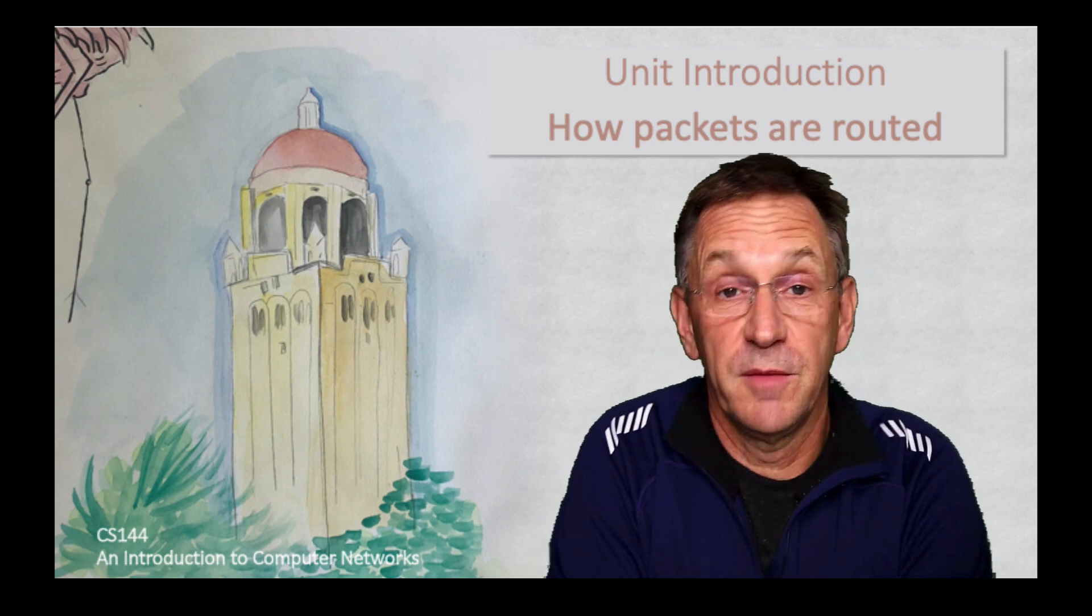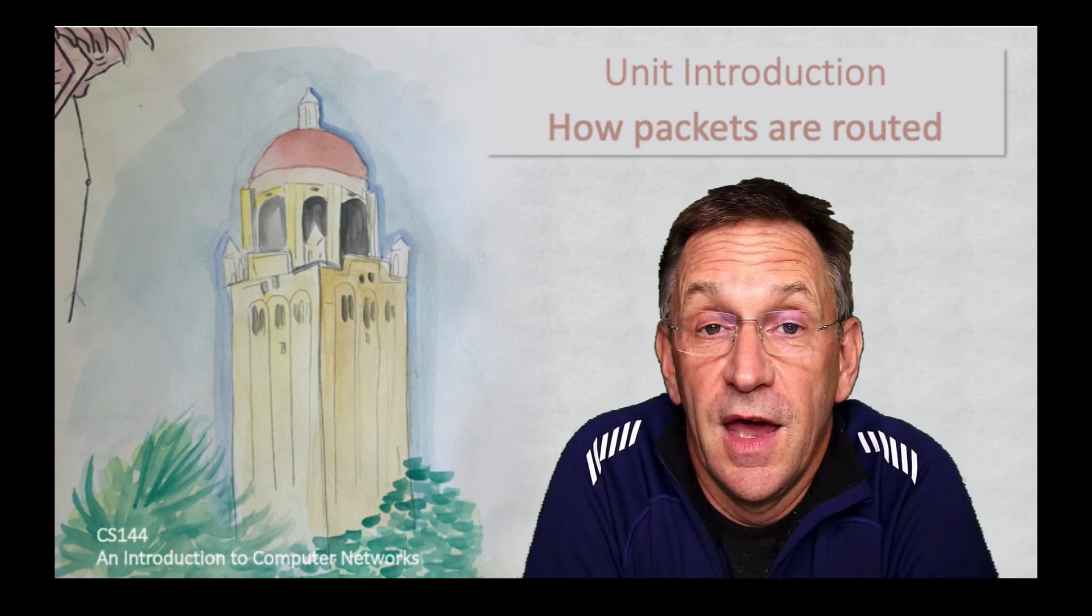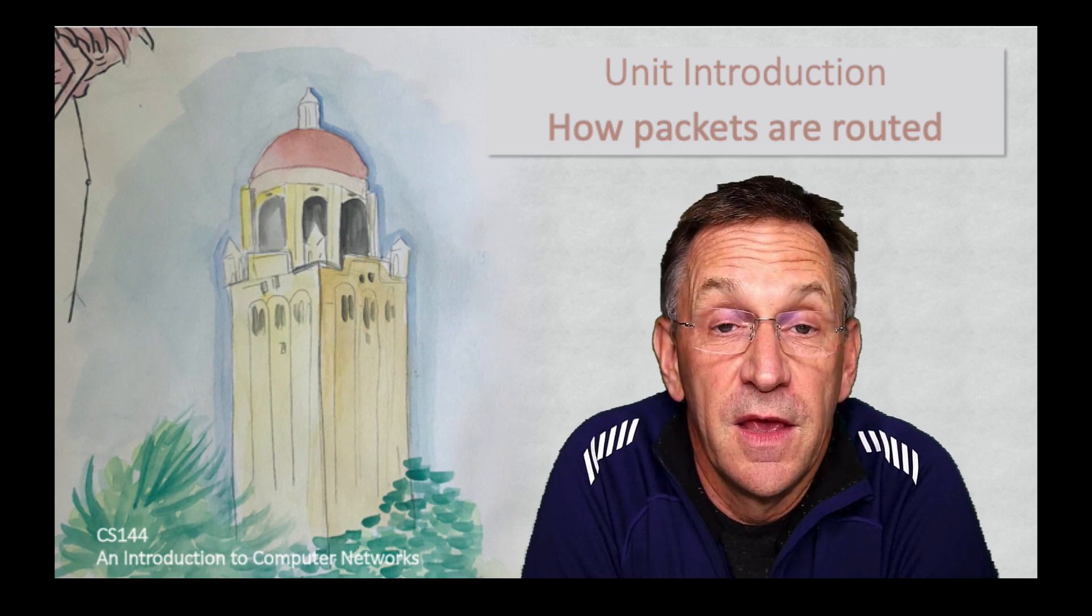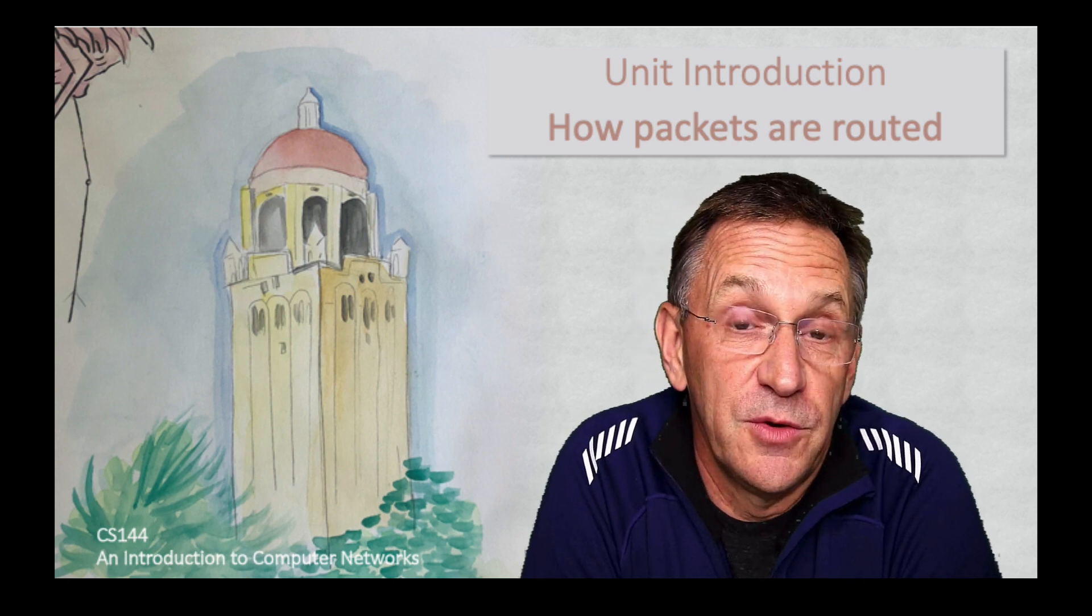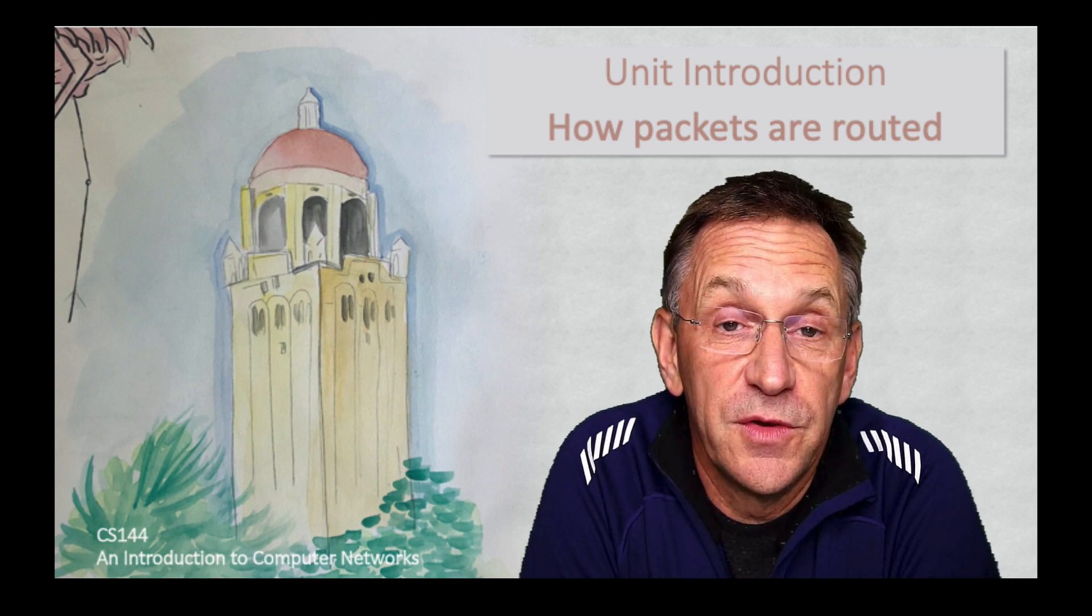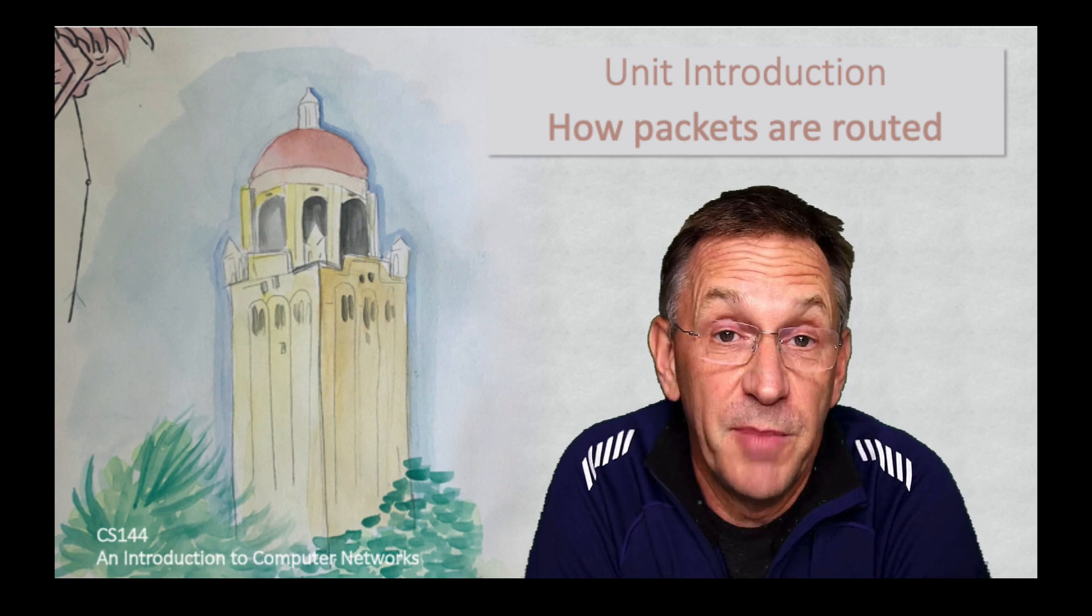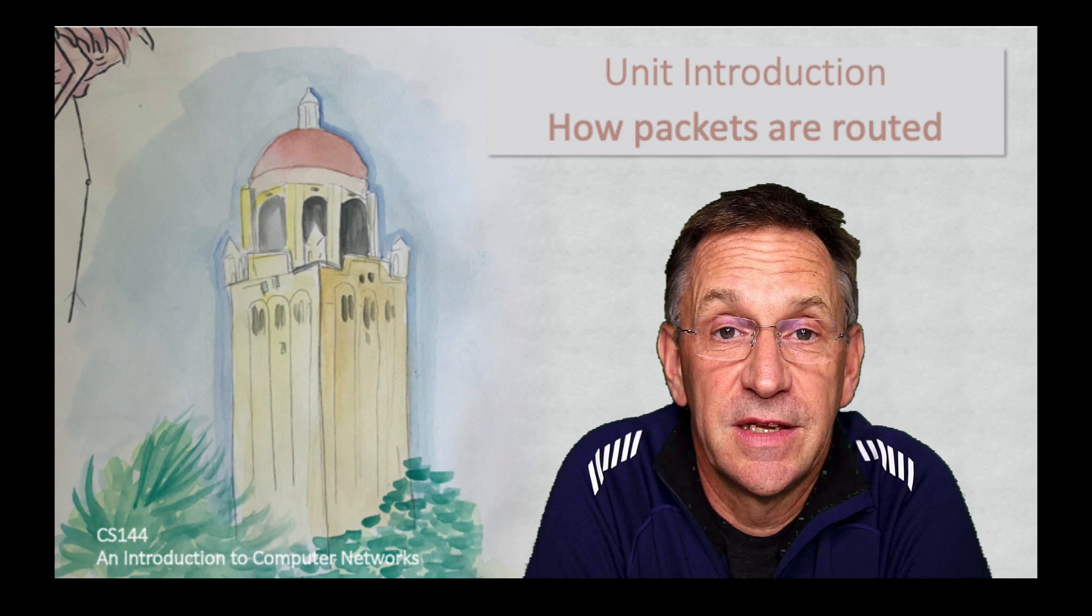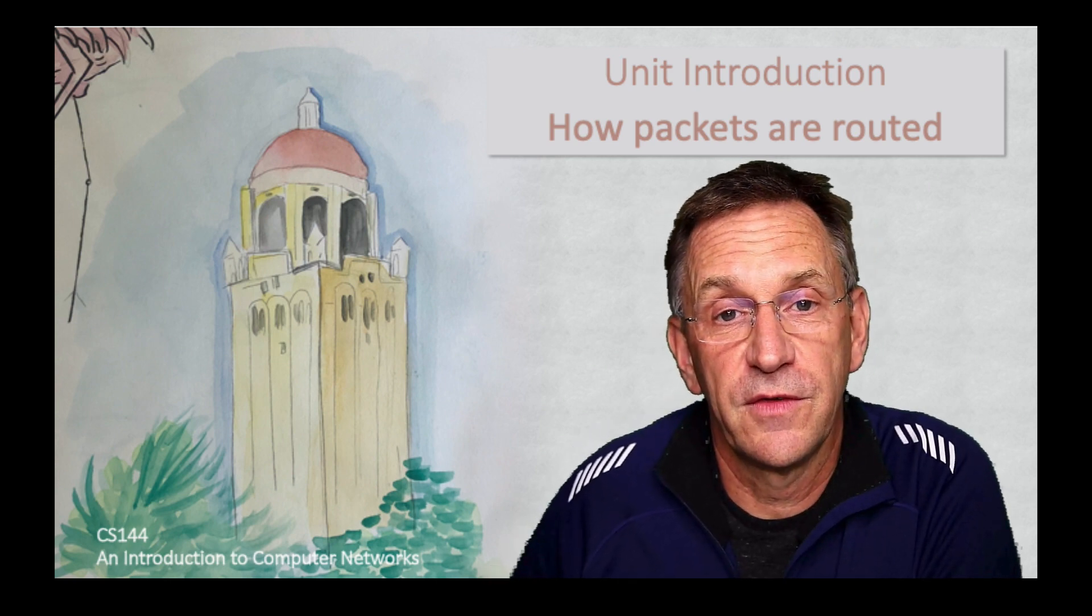What they're actually doing, both the Bellman-Ford and Dijkstra's algorithm, is identifying a spanning tree. We use spanning trees throughout this unit. Spanning because it spans all of the destinations, meaning the tree will allow you to reach all of them, and a tree because it has no loops. These algorithms build a spanning tree rooted at the destination, and then packets just jump onto the tree to find their way to the destination.